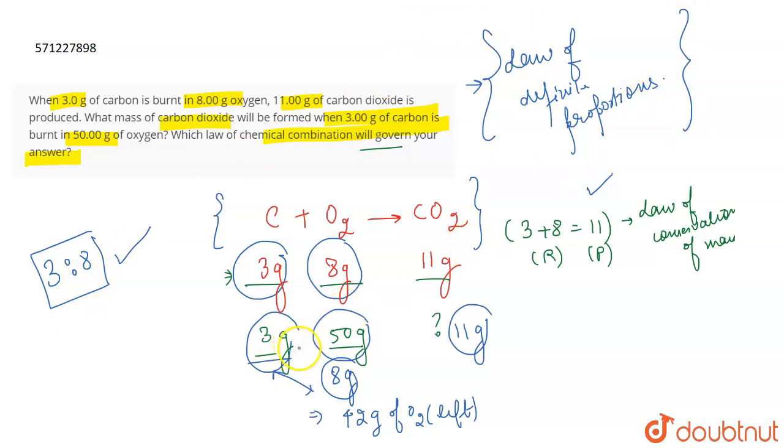And always if you are using a given amount of carbon, which is 3 gram in this case, it is going to react with 8 gram only. Doesn't matter how many grams of oxygen you have available. Only 8 gram of it will be reacted and other will be left behind. So 42 gram will be left behind. 11 gram of carbon dioxide is going to form and it obeys the law of definite proportions. So that's all for the question.